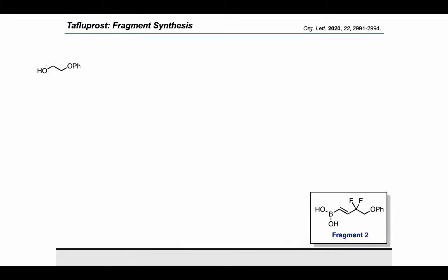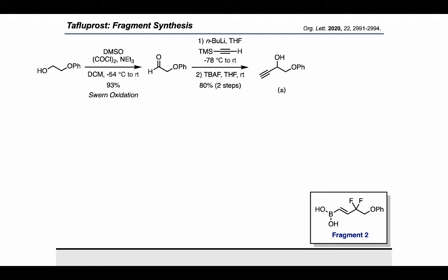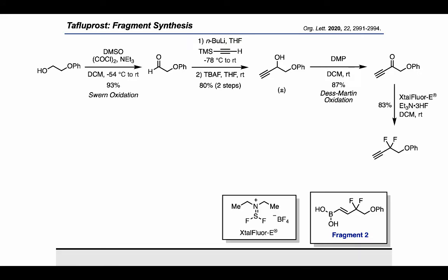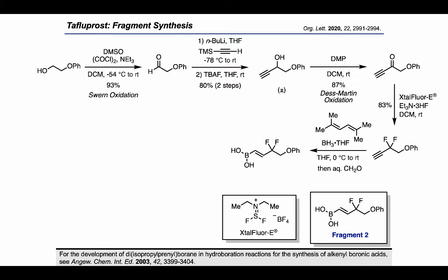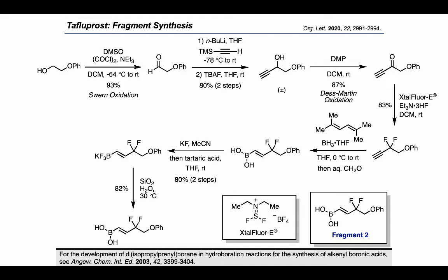For fragment 2, they took a monoprotected 1,2-diol and carried out a Swern oxidation, followed by an alkynylation with a protected acetylene unit, then a TBAF deprotection. A Dess-Martin oxidation resulted in the alkynone, which they used as a substrate for a deoxyfluorination reaction to arrive at this propargylic difluoride. Finally, to convert the alkyne to the alkynyboronic acid, they treated with diisopropylaminylborane, a reagent developed by the Ingleson group for this purpose. Then, in order to obtain the product in pure form, they made the potassium trifluoroborate salt by treating with KF and acetonitrile, which allowed them to use filtration to purify the product. After that, they got back to the boronic acid using silica, water, and a little bit of heat.